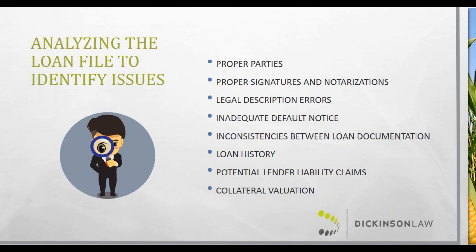If issues are identified, this is truly the point when you have a cooperative borrower — willing to adjust the arrangement — that you can button up issues on the back end. Proper parties and signatures: confirm the proper parties are named and have signed all appropriate documentation. Proper notarizations matter too — defective notaries can allow a bankruptcy trustee to seek to avoid certain mortgages using strong arm authority. Legal description errors are best corrected now rather than trying to reform a mortgage in litigation.